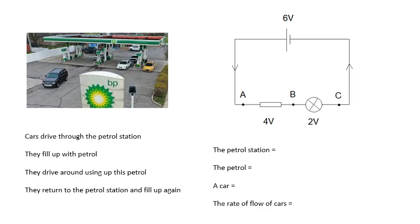What does the petrol station represent? What does the petrol represent? What does a car represent? In my way of thinking: the petrol station is the power supply. A coulomb of charge goes through the power supply and fills up with petrol — it gains electrical potential energy. Chemical potential energy is transferred into electrical potential energy. So a car is a coulomb of charge, a packet of charge, and the rate of flow of cars is the current — coulombs per second.